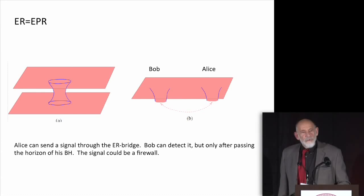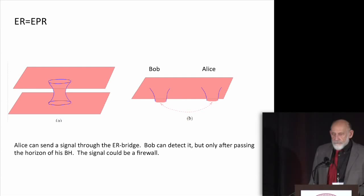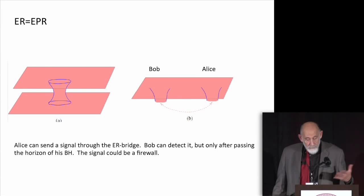There's no way for Bob to know what Alice is going to do. And so Bob has no way of knowing really when he jumps in if he's going to meet a firewall or if he's going to meet roses, so to speak, or nothing, just absolutely nothing. So that's the setup.